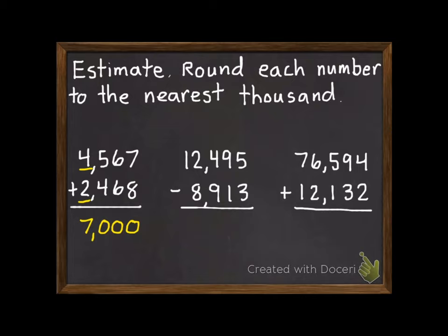Our second problem, our first number is going to stay at 12,000. Then we're going to subtract 9,000. So that will equal 3,000.